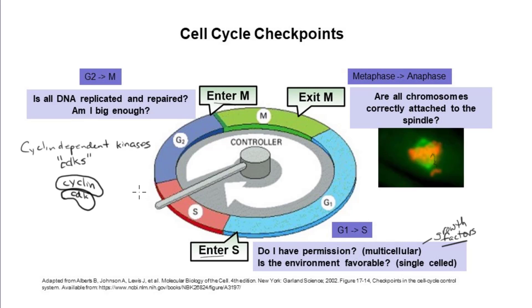We're going to focus on the G2-to-M transition, but everything applies to the G1-to-S transition as well — it's a very similar mechanism. For both, the presence or absence of cyclin protein alone is not sufficient to activate or inactivate CDK. There are two requirements for activating CDK: first, cyclin must be bound to CDK; and second, CDK has to be phosphorylated by other kinases in the correct pattern — on the correct amino acids in the CDK polypeptide. So two modes of regulation occur: cyclin must be present, and the correct phosphorylation pattern must be established.